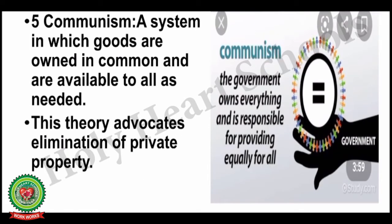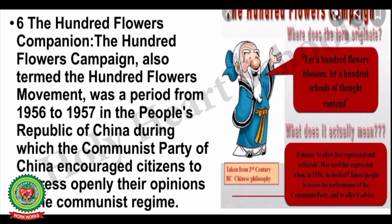The next term is Communism — a system in which goods are owned in common and are available to all as needed. This theory advocates elimination of private property; any economic system where everything is under government control with no space for private property is called communism. The next term is the 100 Flowers Campaign — a period from 1956 to 1957 in the People's Republic of China during which the Communist Party encouraged citizens to openly express their opinions of the communist regime, giving common people freedom to express views about communist rule.